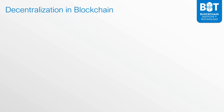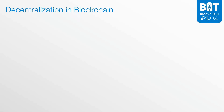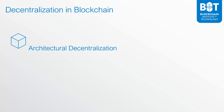In blockchain, there are three types of decentralization. The first one is architectural decentralization. Architectural decentralization has to do with how many physical computers are actually running on the system. So if you're looking at an architecturally decentralized blockchain, what you're looking at is a blockchain that's running on multiple computers that are all running the same exact blockchain. But that's just one type of decentralization.